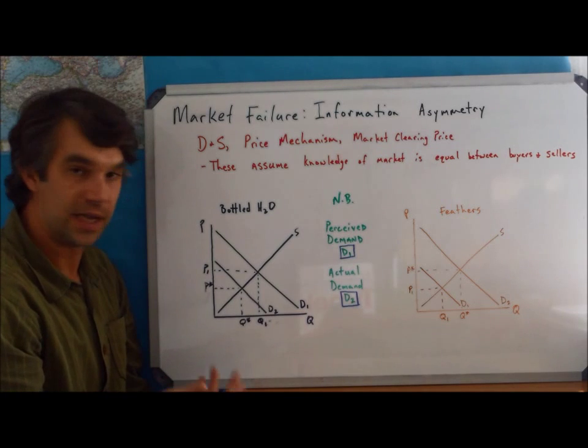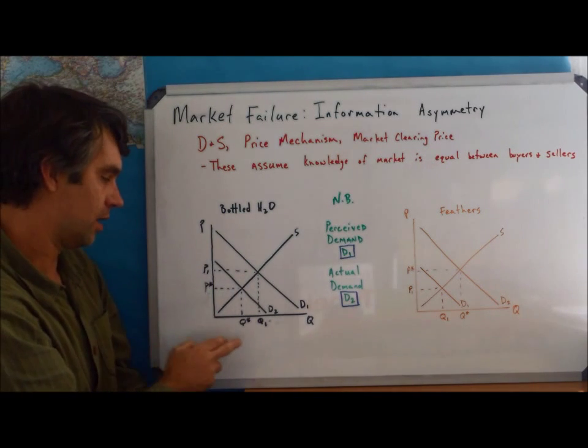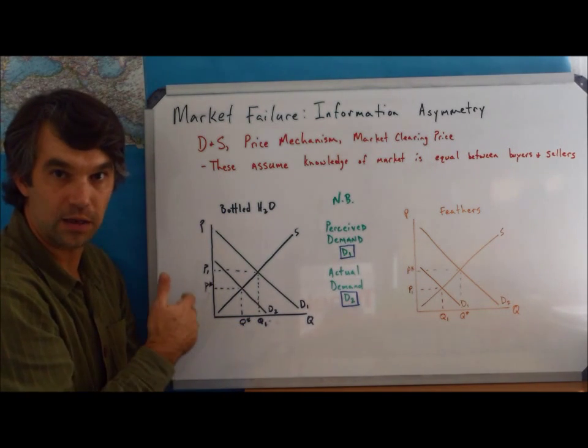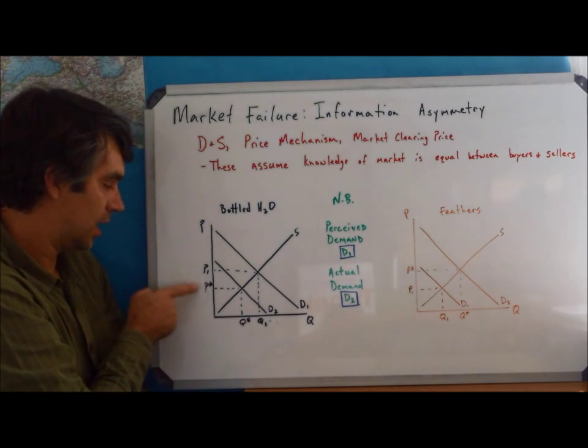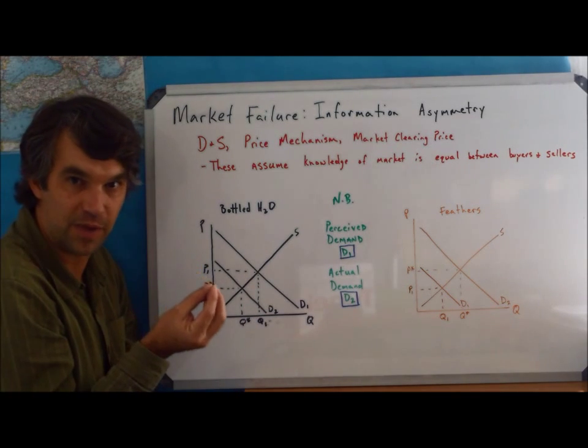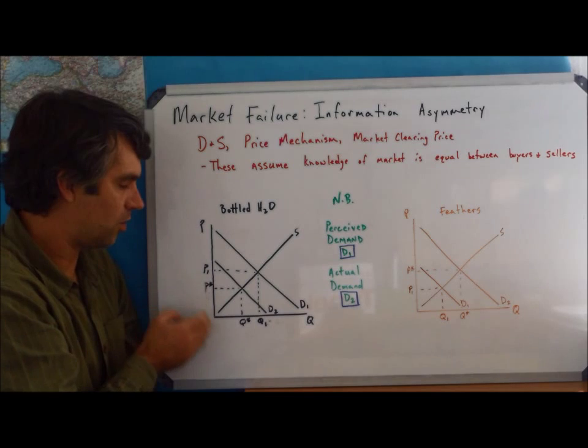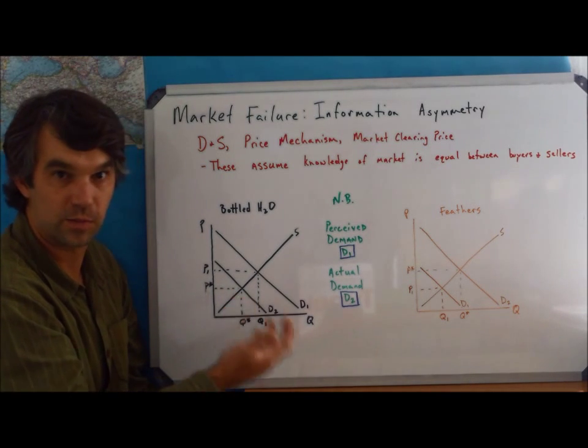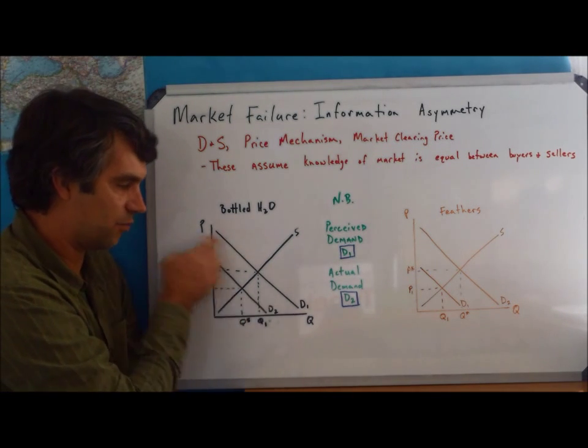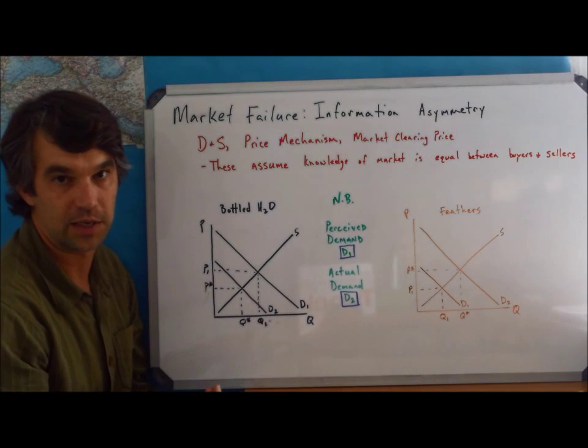So, of course, what that means, and the reason why it's market failure, is we're over-allocating our factors of production and over-allocating the amount of money we have to spend. We're over-allocating it into this market because of this bad information that's shown over here at D1.